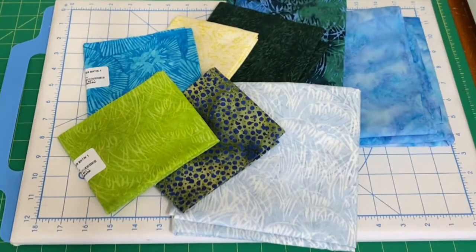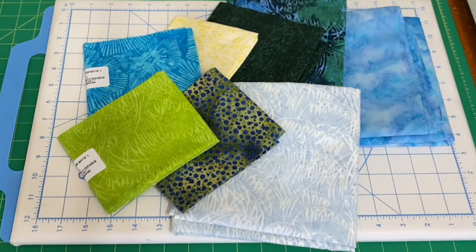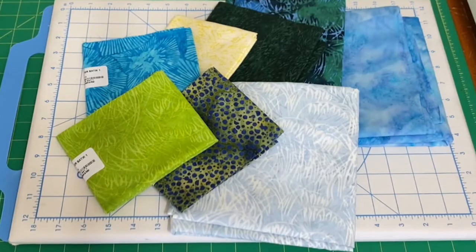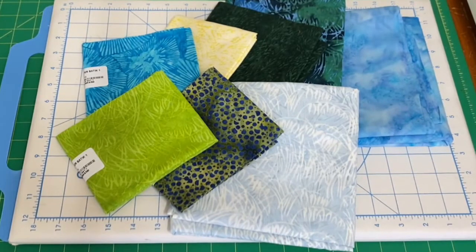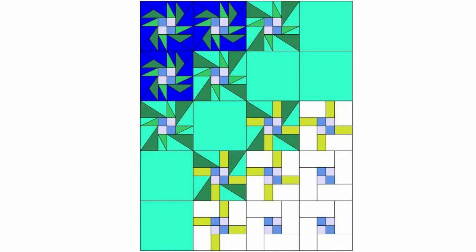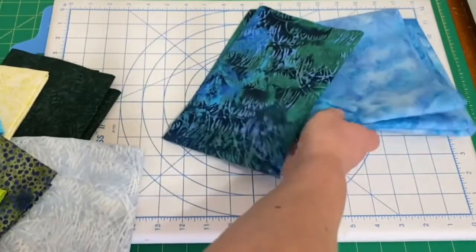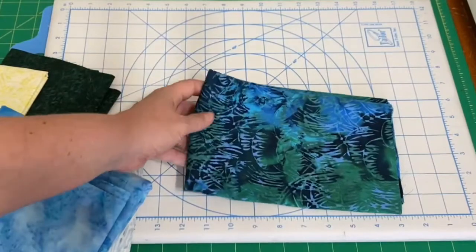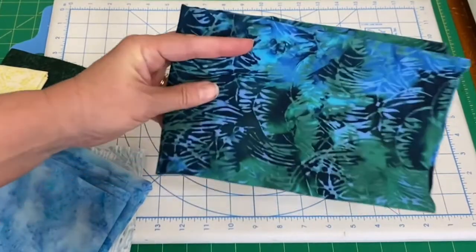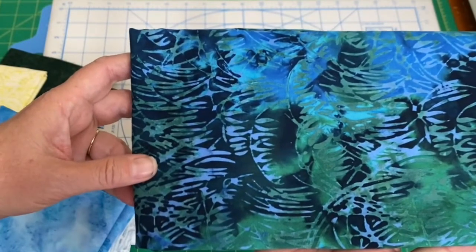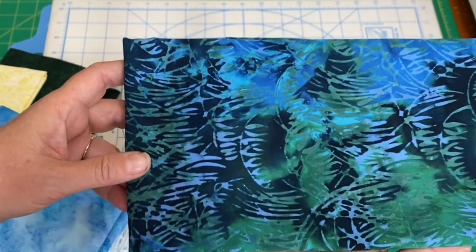Here are the fabrics I have chosen for the Meteor Quilt Along. So let me talk through how I selected my fabrics. I knew I had the dark blue in the corner and then the turquoise. So as I was looking at the fabric store, this print jumped out at me. It has all the colors that I wanted in the quilt. So it was a good choice as the focal point, the inspiration for the quilt.